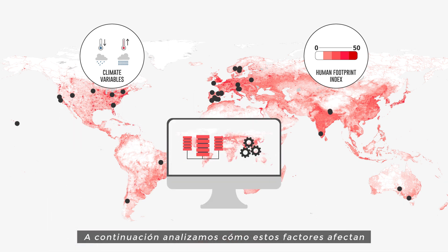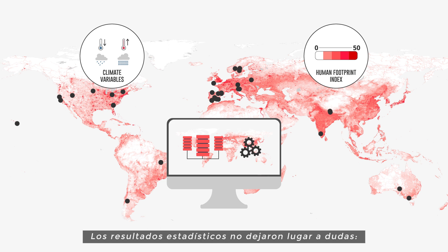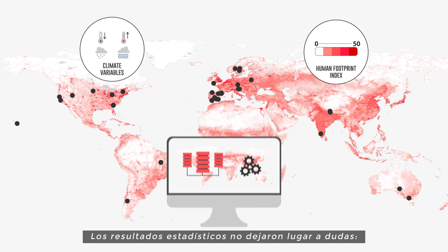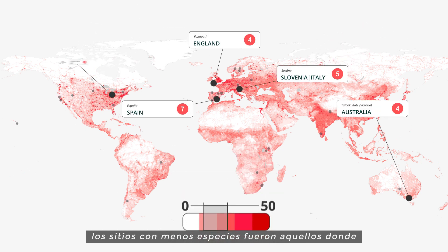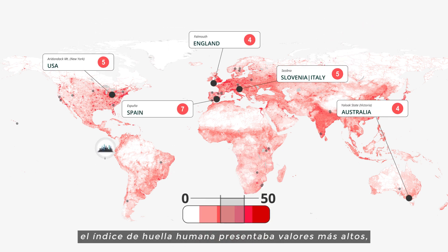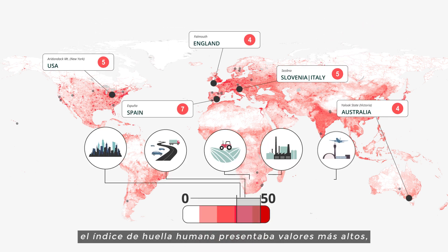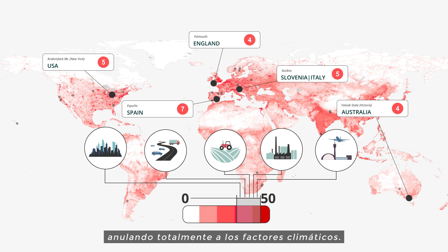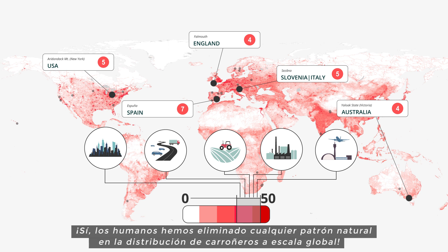We then analyzed how these factors affected the composition of the different scavenger communities. The statistical results left no doubt: the sites with fewer species were those with the highest Human Footprint Index values, thus overriding climatic factors. Yes, humans have erased any natural pattern in scavenger distribution at a planetary scale.